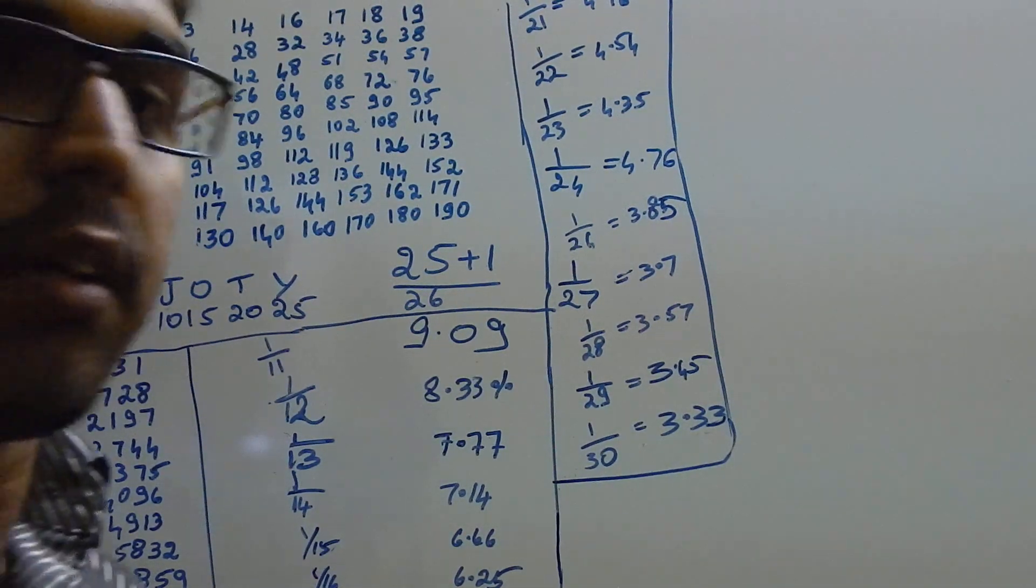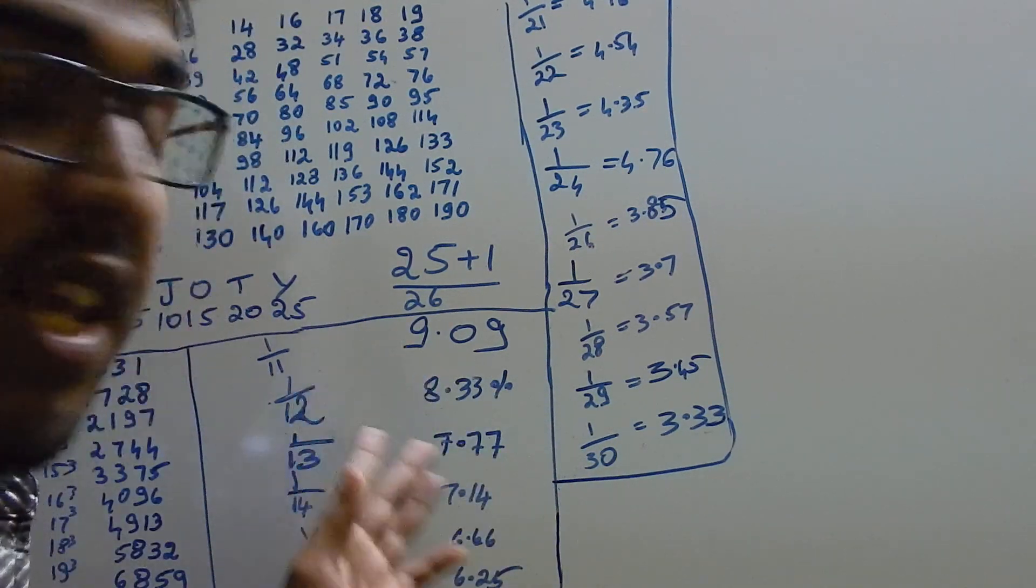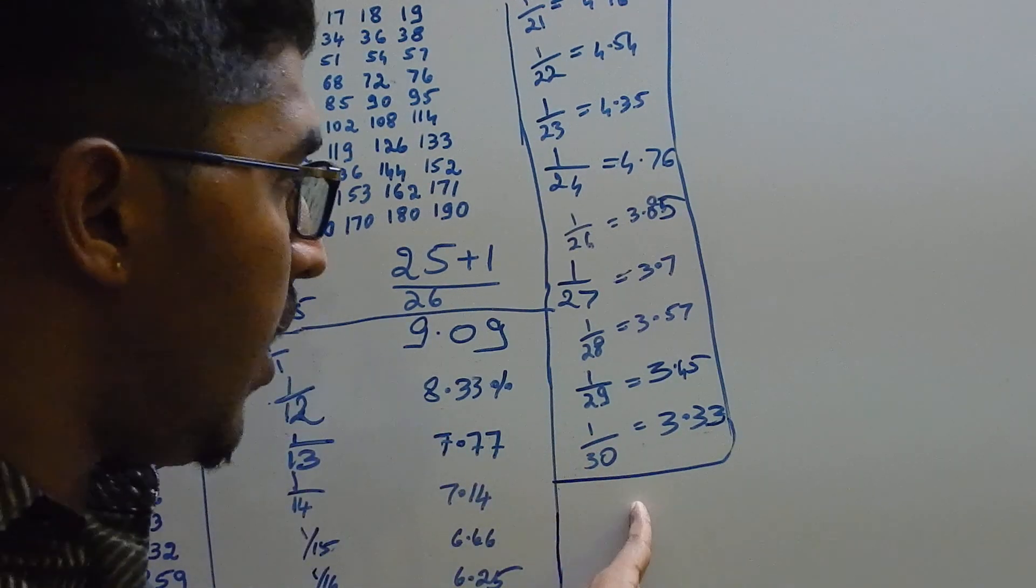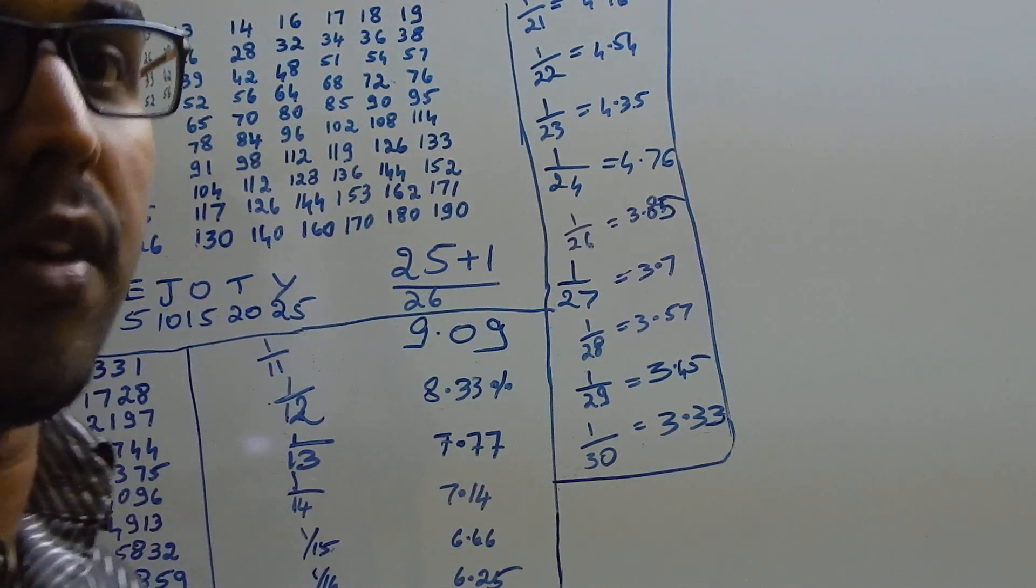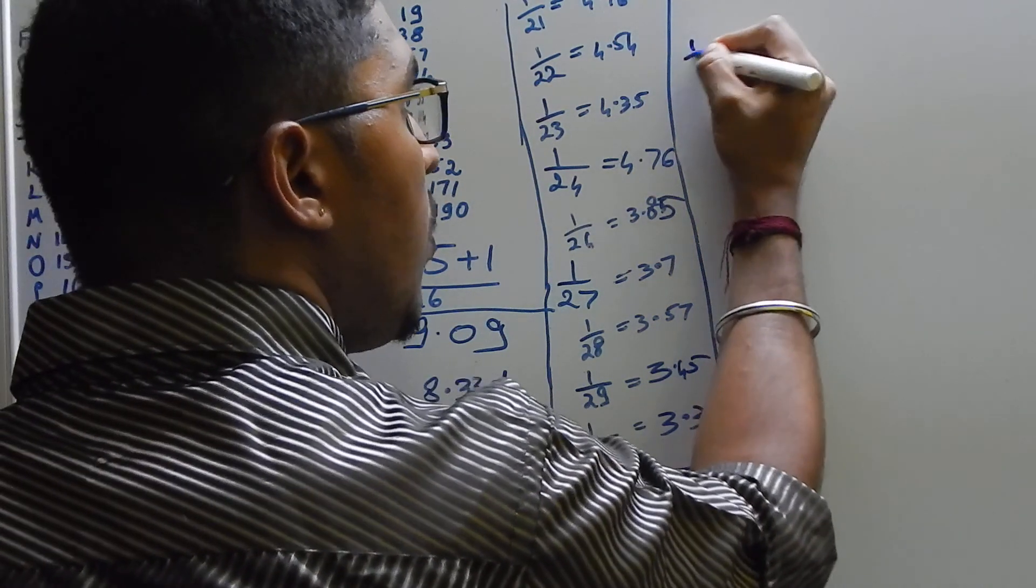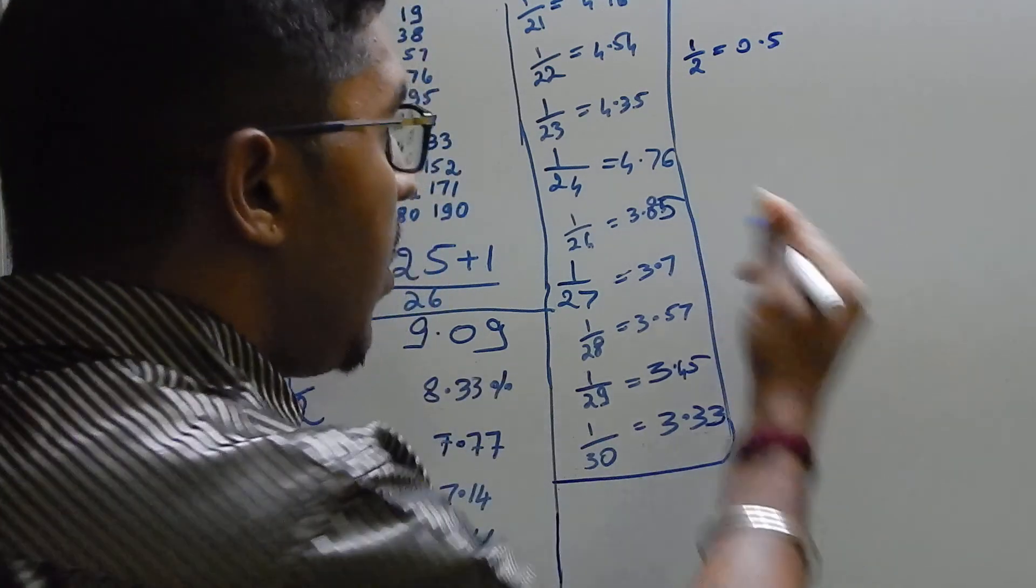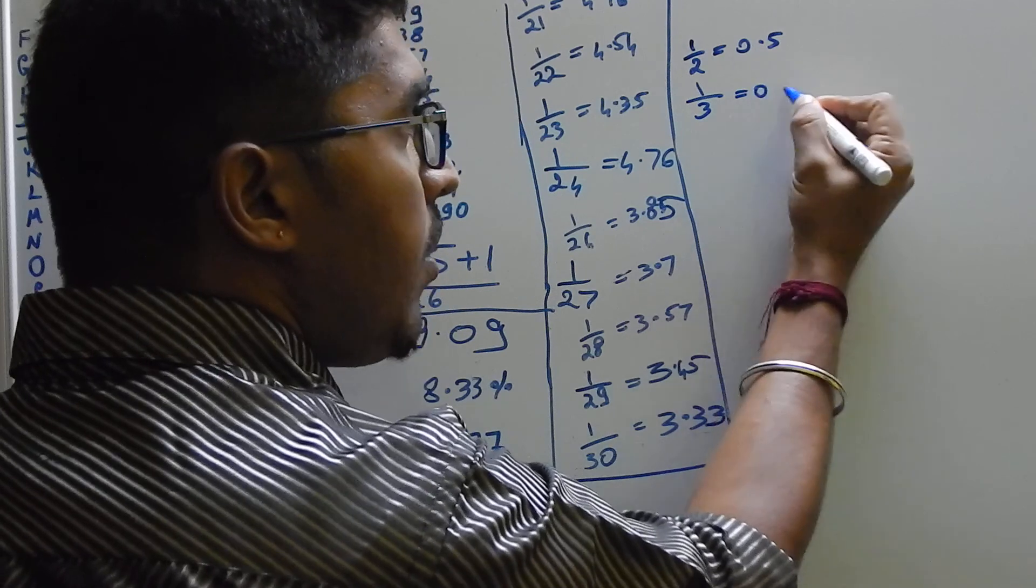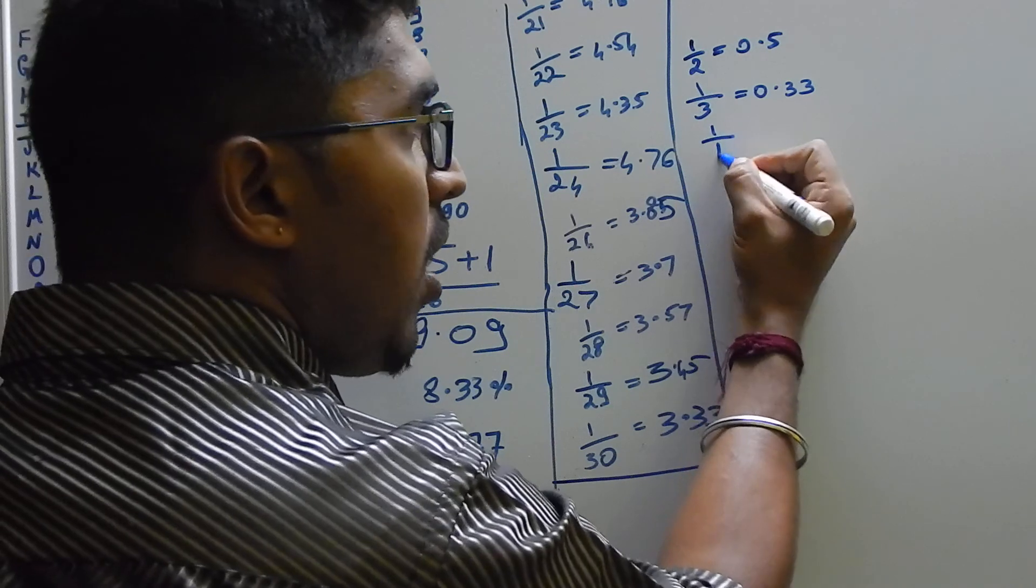The next important thing in the quantitative aptitude section is reciprocals. You should be knowing the reciprocals from 1 to 10. Reciprocal of 1 is 1 itself. Reciprocal of 2 is 1 by 2, which is 0.5. Reciprocal of 1 by 3 is 0.33, and so on.